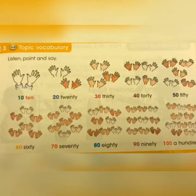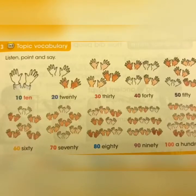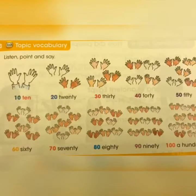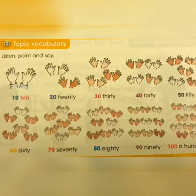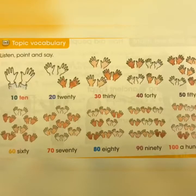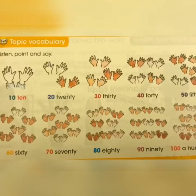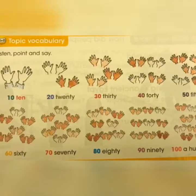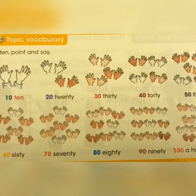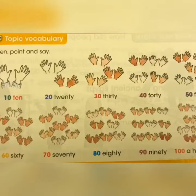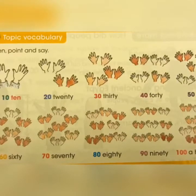Track 45: 10, 20, 30, 40, 50, 60, 70, 80, 90, 100. 20, 21, 22, 23, 24, 25, 26, 27, 28, 29, 30.